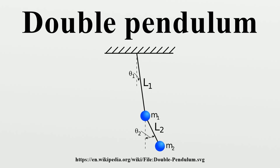Analysis and interpretation: Several variants of the double pendulum may be considered. The two limbs may be of equal or unequal lengths and masses. They may be simple pendulums or compound pendulums and the motion may be in three dimensions or restricted to the vertical plane.